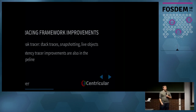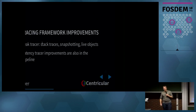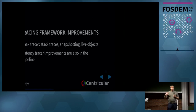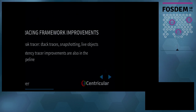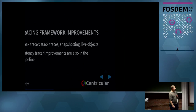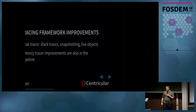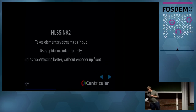We have a tracing framework that has seen quite a few improvements. We have a leak tracer in particular that works on embedded systems too — it doesn't have the overhead of Valgrind on the desktop, which is much nicer. The leak tracer can do stack traces and we can do snapshotting now. You can figure out better where latency in your pipeline comes from without digging through debug logs in too much detail.